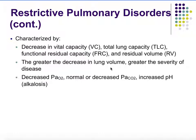The greater the decrease in lung volume, the more severe the disease. You'll also see a decrease in the partial pressure of oxygen in circulation. CO2 can actually be normal or reduced, and you tend to see an increase in pH — so alkalosis.